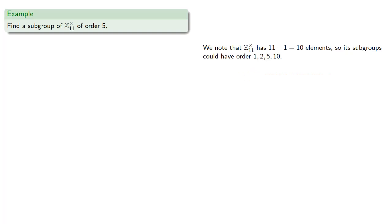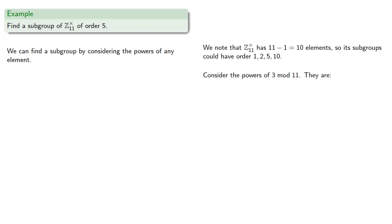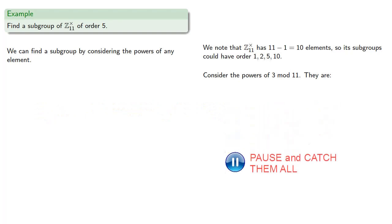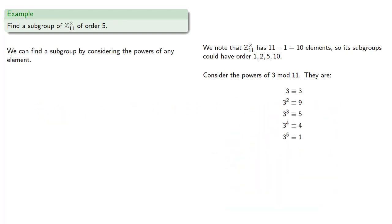We can find a subgroup by considering powers of any element. Let's consider the powers of 3 mod 11. And we find these are... and we're done! We've found a subgroup of order 5. So if we pick an element of order 5, we're done.